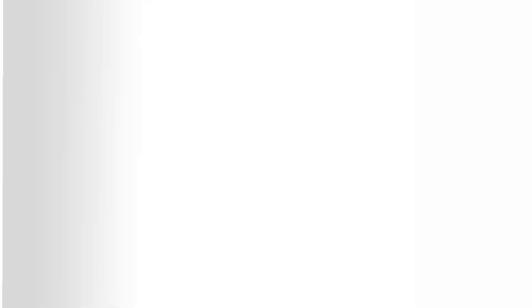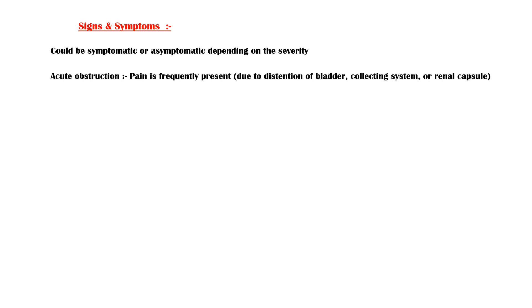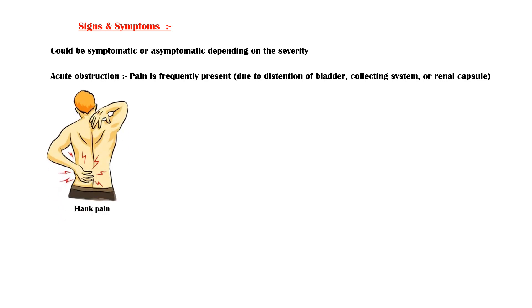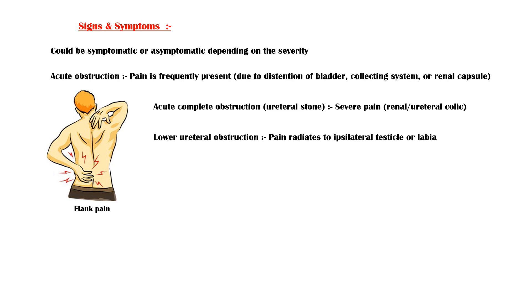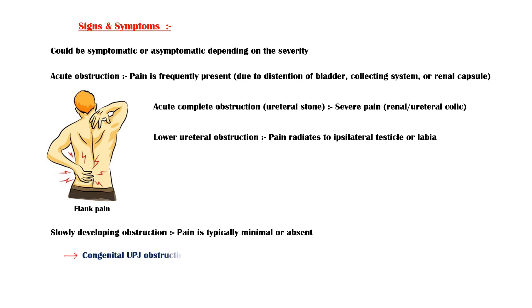Hydronephrosis could be symptomatic or asymptomatic depending on the severity of the disease. In case of acute obstruction, a dull pain is frequently present due to distention of the bladder, collecting system, or renal capsule — referred to as flank pain. In case of acute complete obstruction, like with a ureteral stone, a severe pain called renal or ureteral colic is felt. In lower ureteral obstruction, this pain radiates to the ipsilateral testicle or labia. By contrast, in slowly developing obstruction, pain is typically minimal or absent — common examples include congenital ureteropelvic junction obstruction and pelvic tumors.